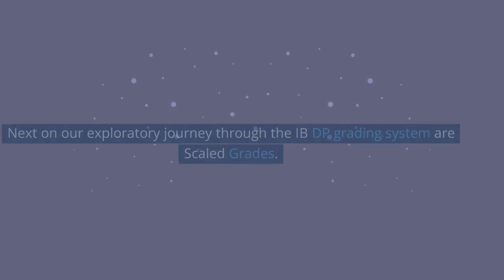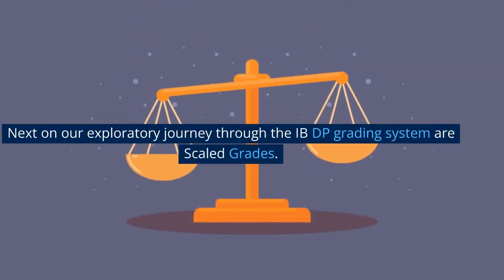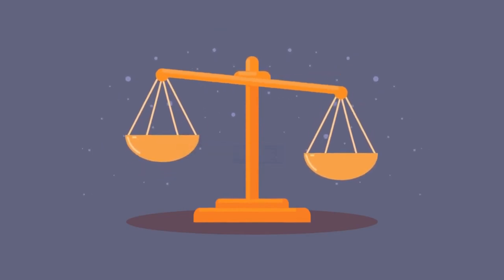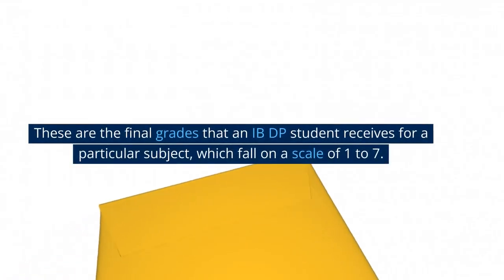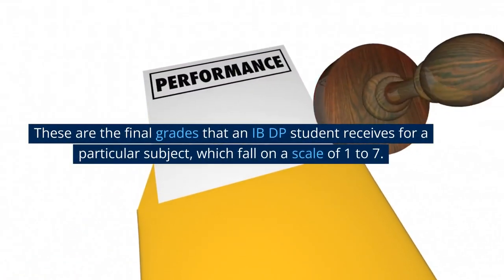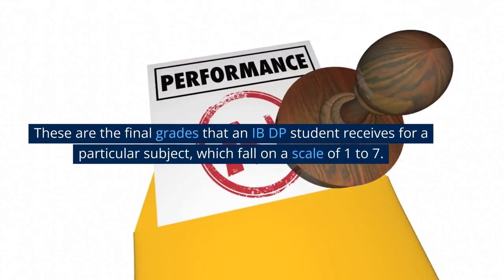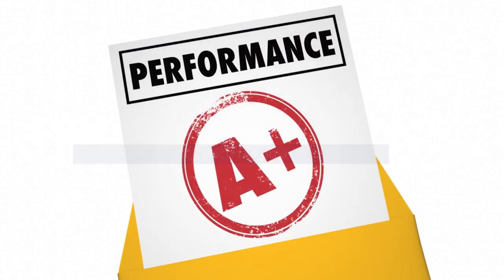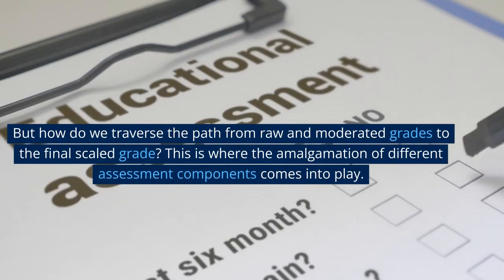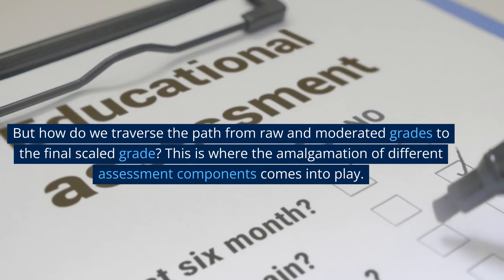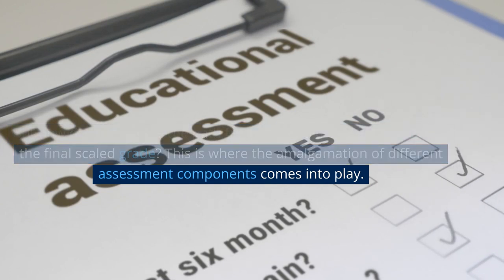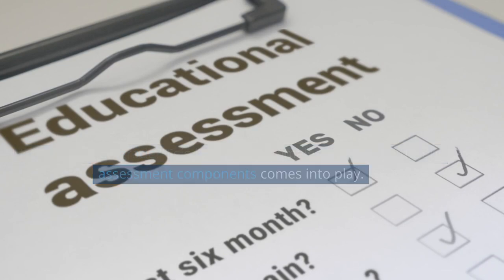Scaled Grades. Next on our exploratory journey through the IBDP grading system are scaled grades. These are the final grades that an IBDP student receives for a particular subject, which fall on a scale of 1 to 7. But how do we traverse the path from raw and moderated grades to the final scaled grade? This is where the amalgamation of different assessment components comes into play.